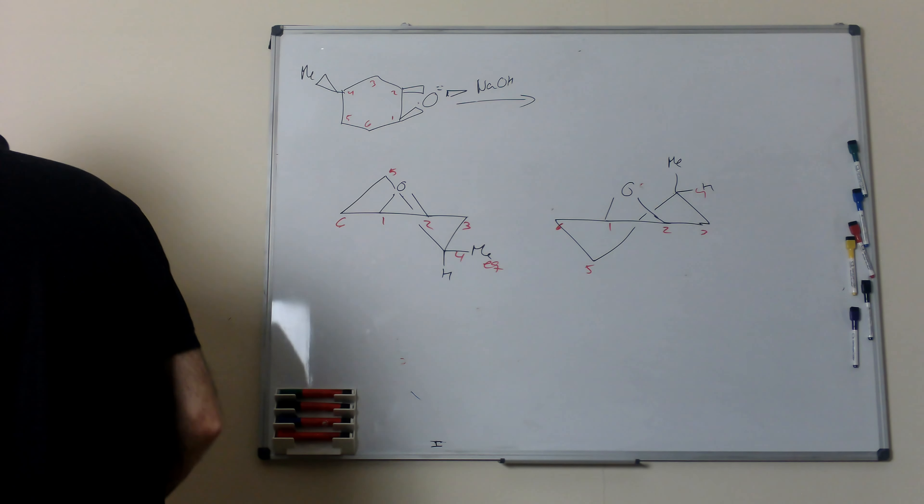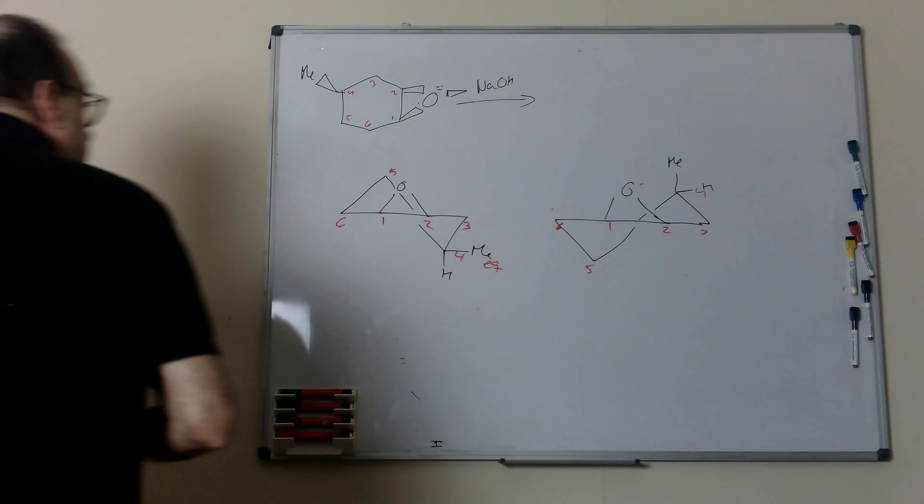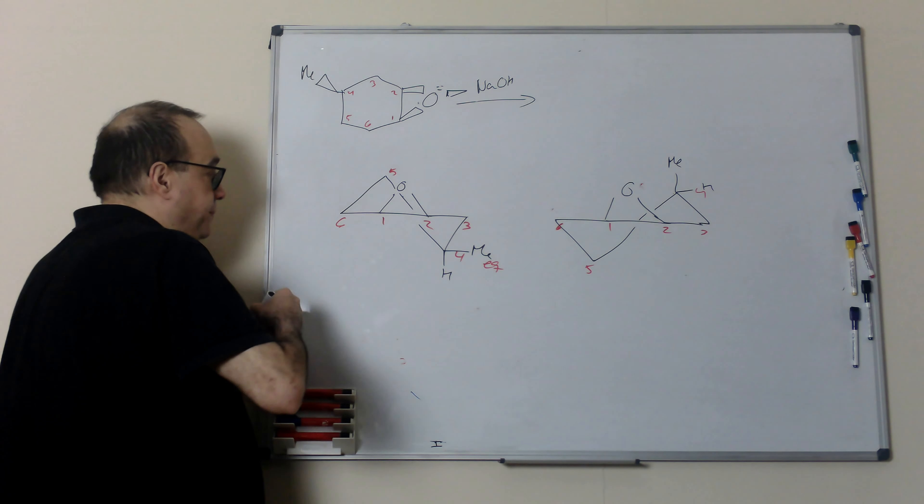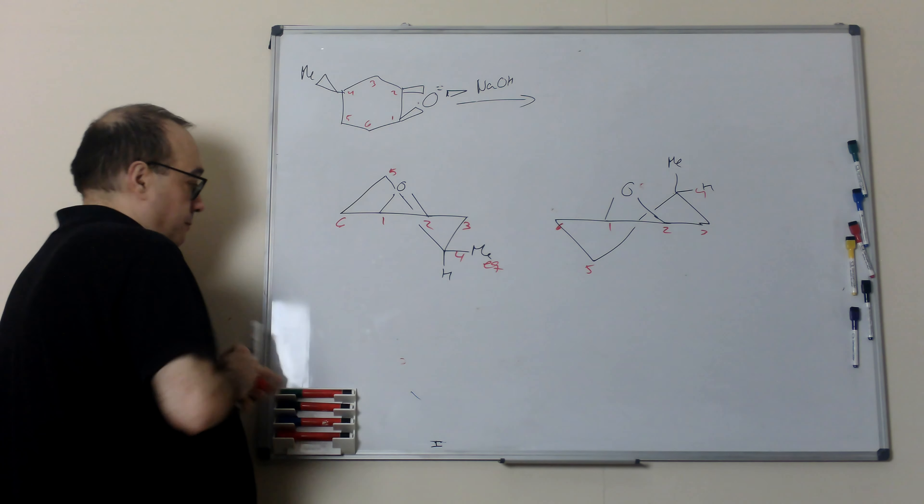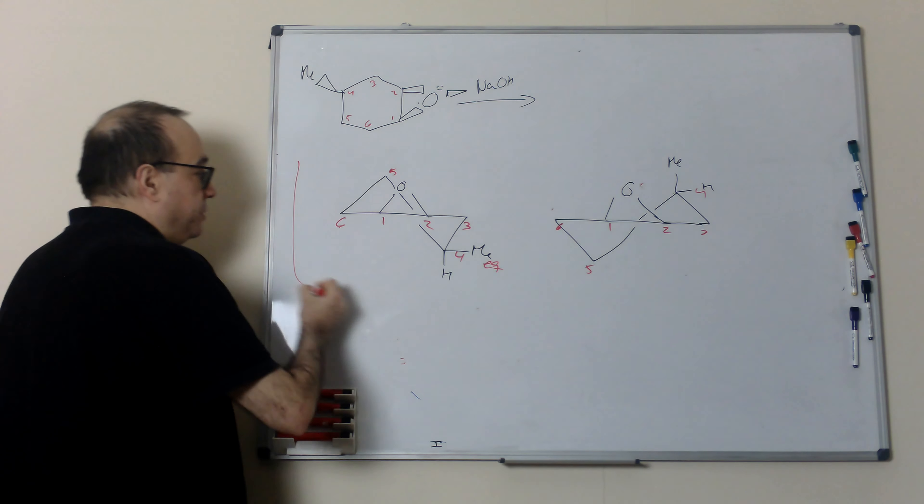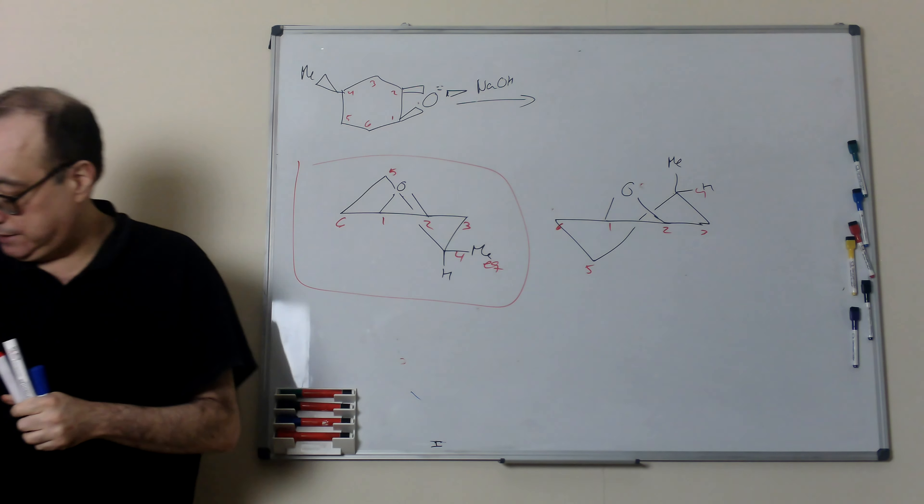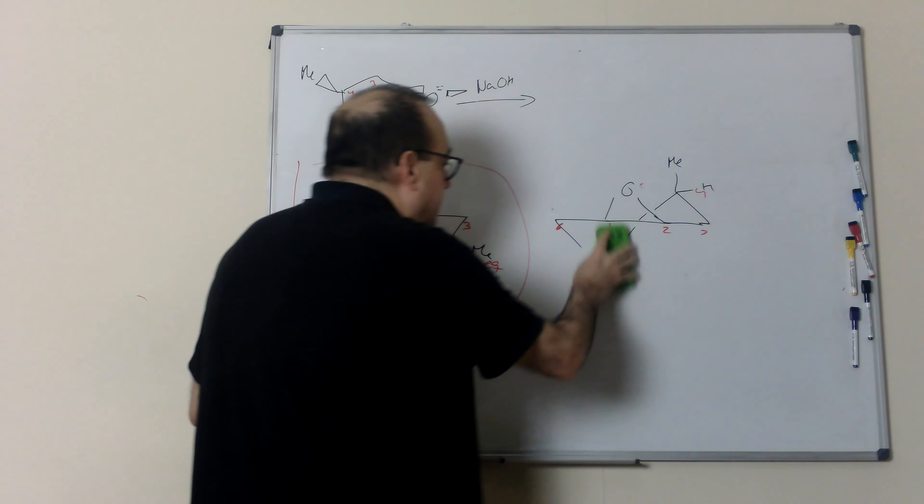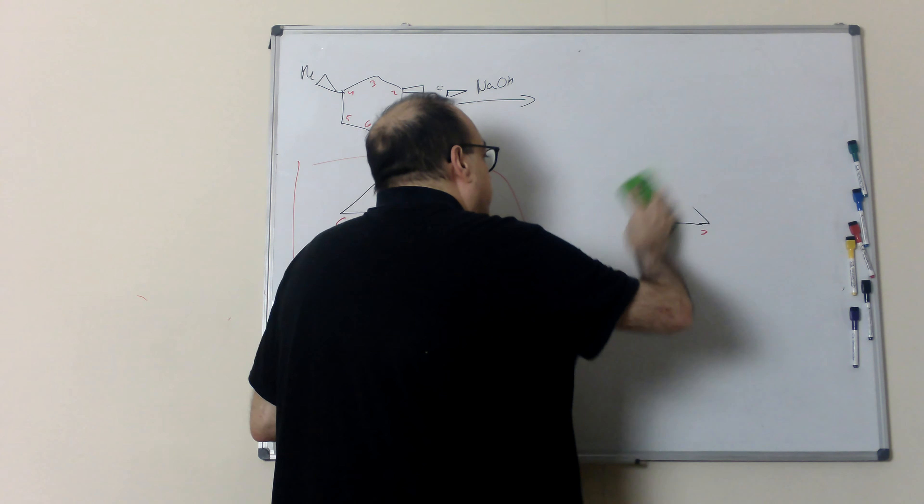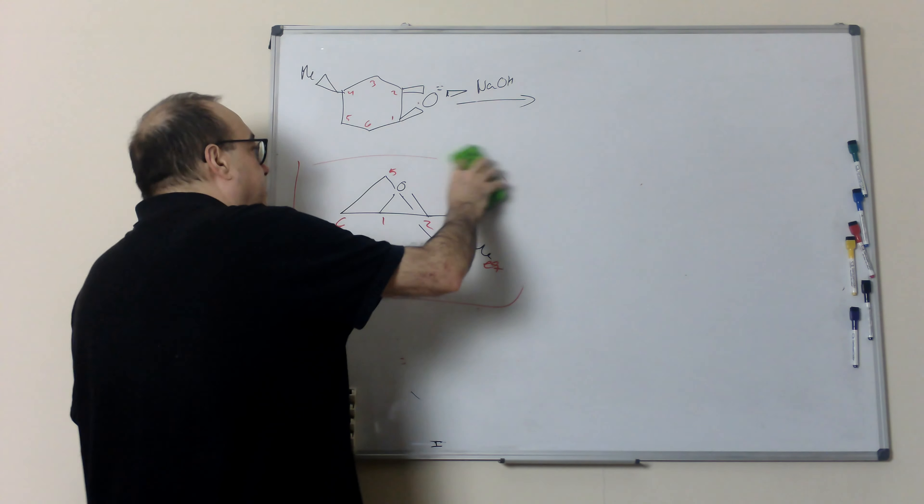We choose this conformer with the metal in the equatorial position. That means that I will delete this other conformer.